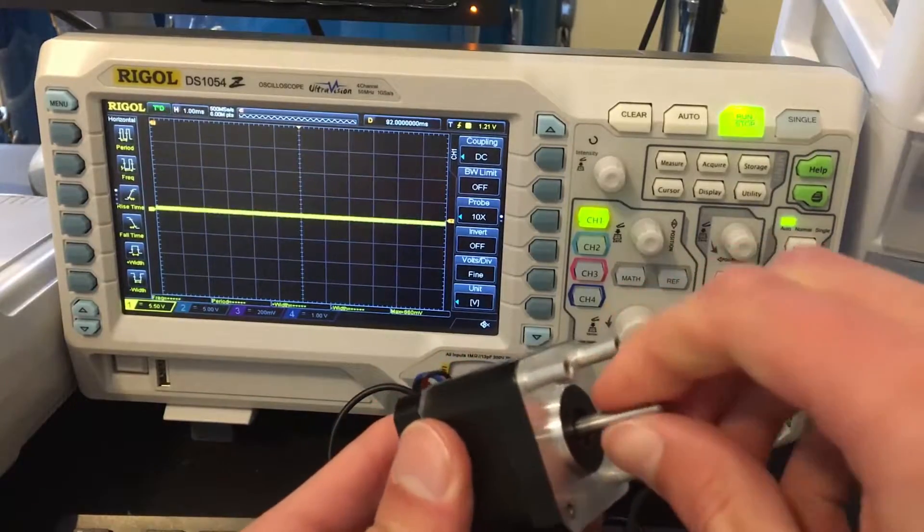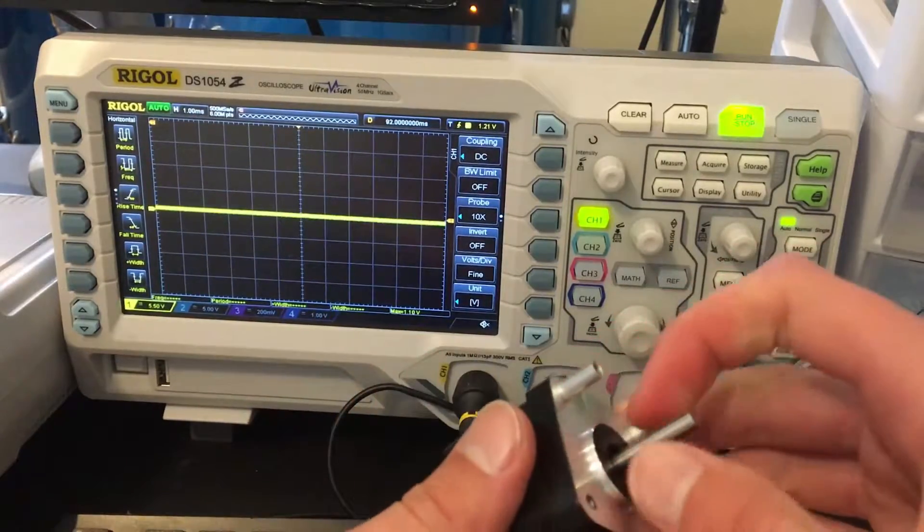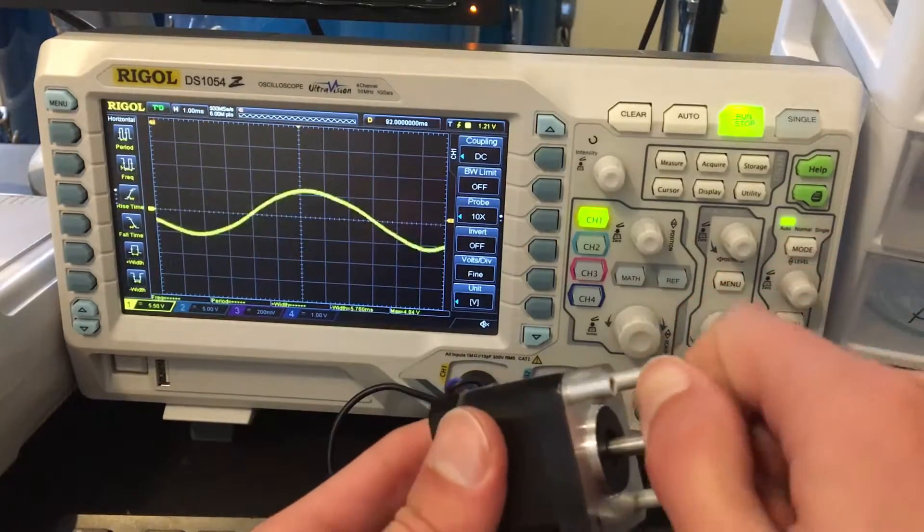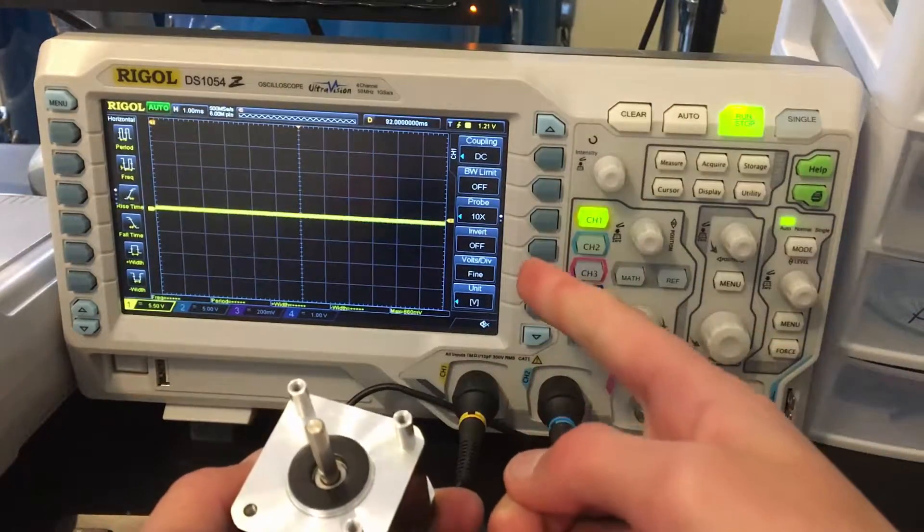While we could use this to generate AC, DC is much more useful for applications such as charging a phone or running some LEDs, so we have to find a way to turn this AC into DC power.